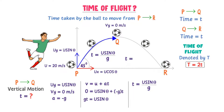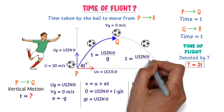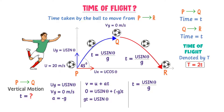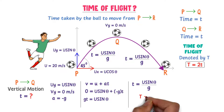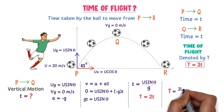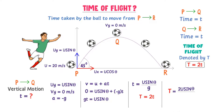It will again take t = u sin θ / g to go from Q to R. So the total time from P to R is T = 2t, which gives us the time of flight: T = 2u sin θ / g. This is the equation of the time of flight of a projectile.